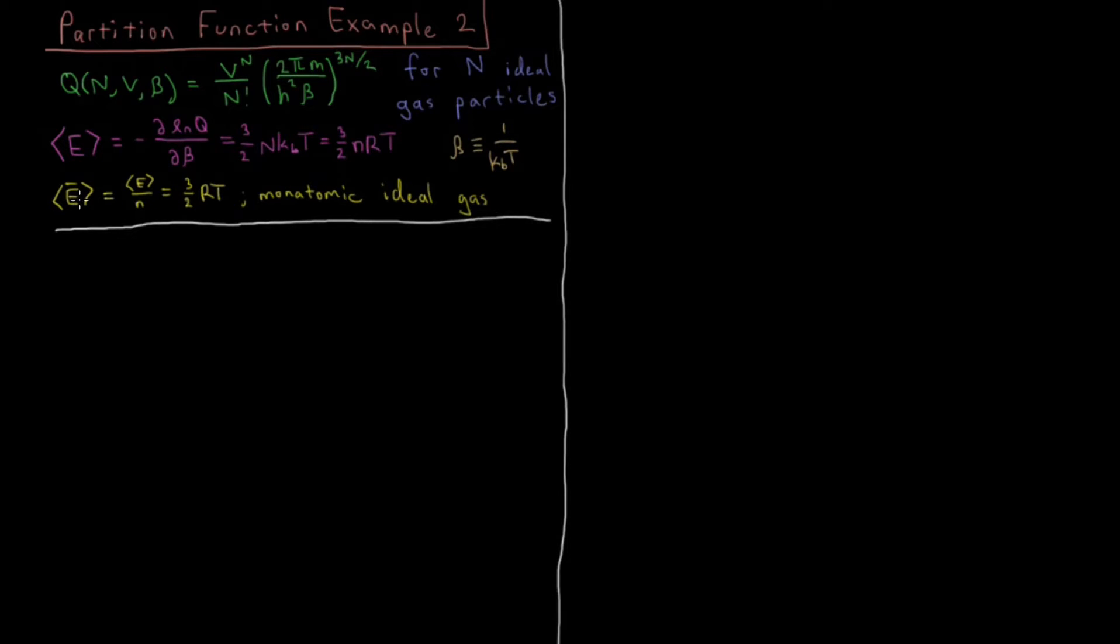And then we went on to look at the molar energy as well, seeing that that's the energy divided by the number of moles, so the energy per unit particle, and that is equal to 3 halves gas constant times temperature. So a mole of monatomic ideal gas particles at a given temperature will have 3 halves RT energy per mole.